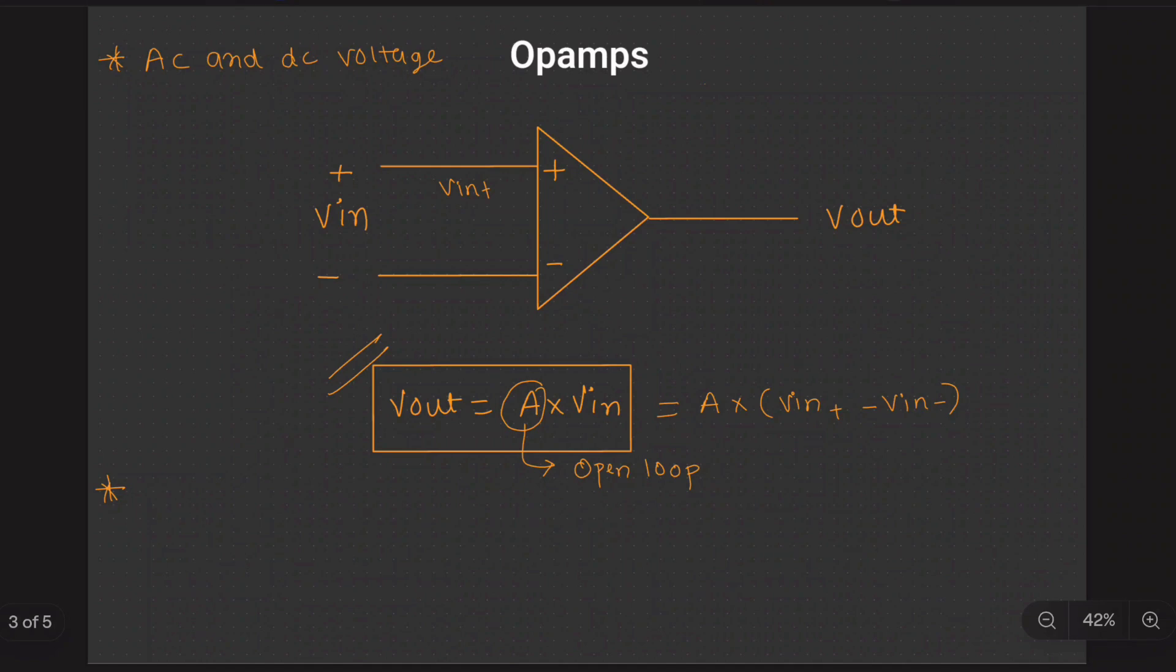For the ideal voltage amplifier, the condition is the amplifier has to have large input impedance. This operational amplifier gives very large input impedance and small output impedance.